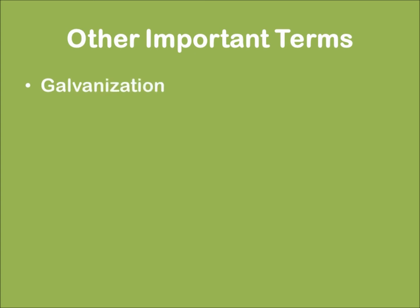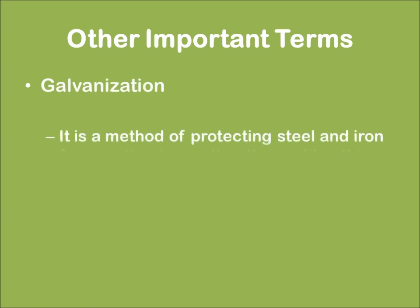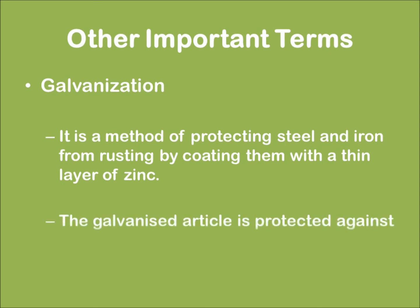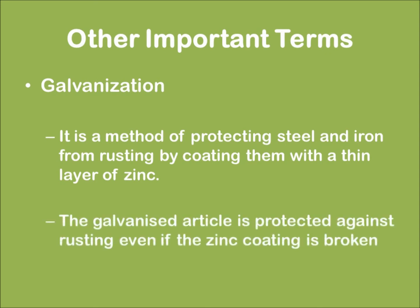Now let us learn about galvanization. It is a method of protecting steel and iron from rusting by coating them with a thin layer of zinc. A galvanized article is protected against rusting even if the zinc coating is broken.